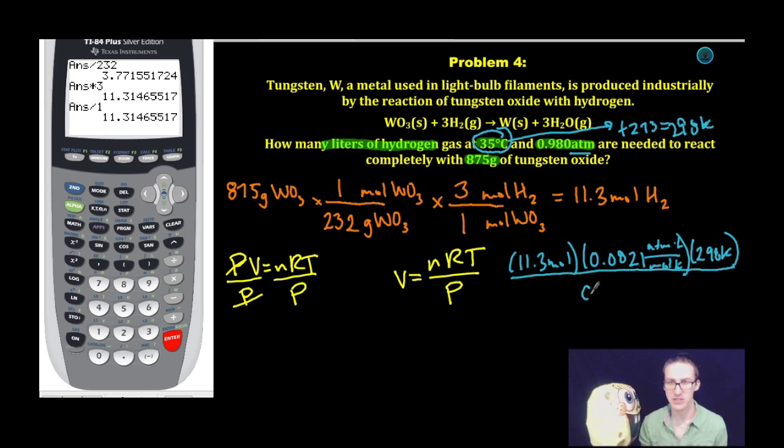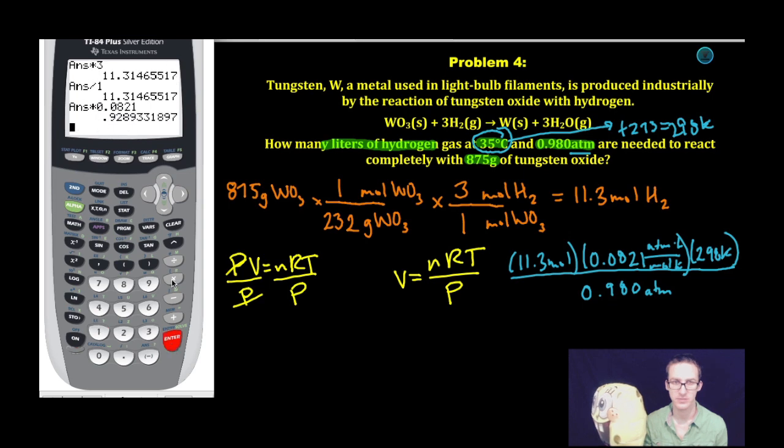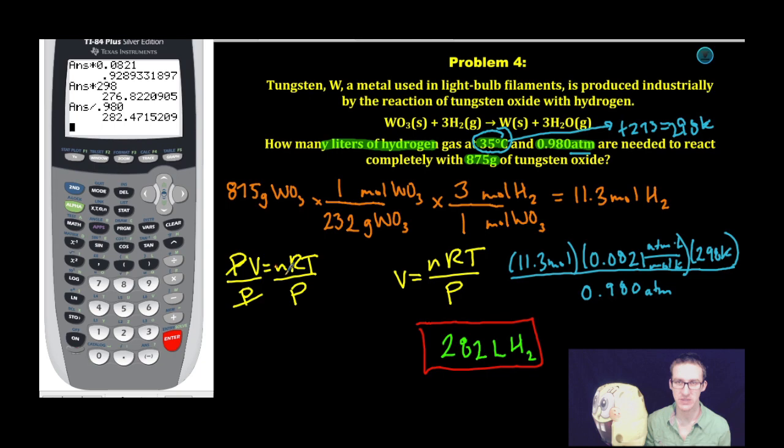The pressure in atmospheres is 0.980, which is why I chose the 0.0821 R value, because my pressure units will cancel out. A quick trip to my calculator indicates that I'm going to make 282 liters of hydrogen gas. And that is the most difficult type of problem you can expect to see on this next test.